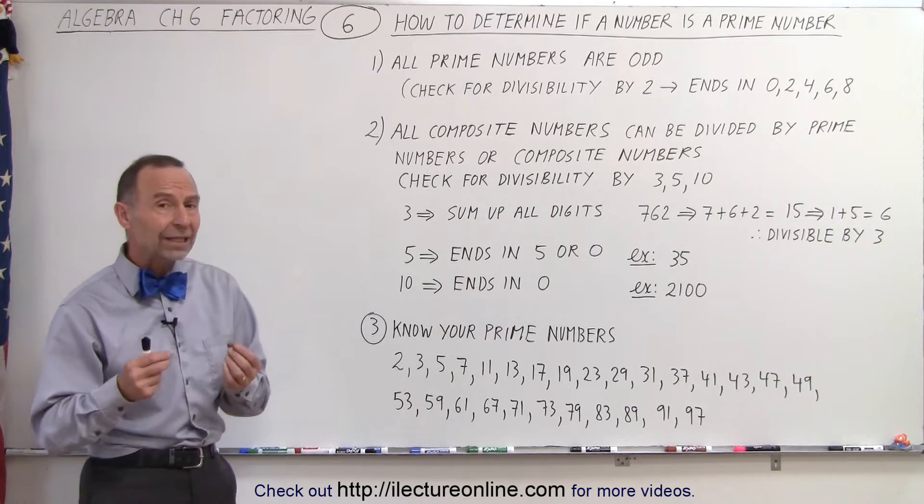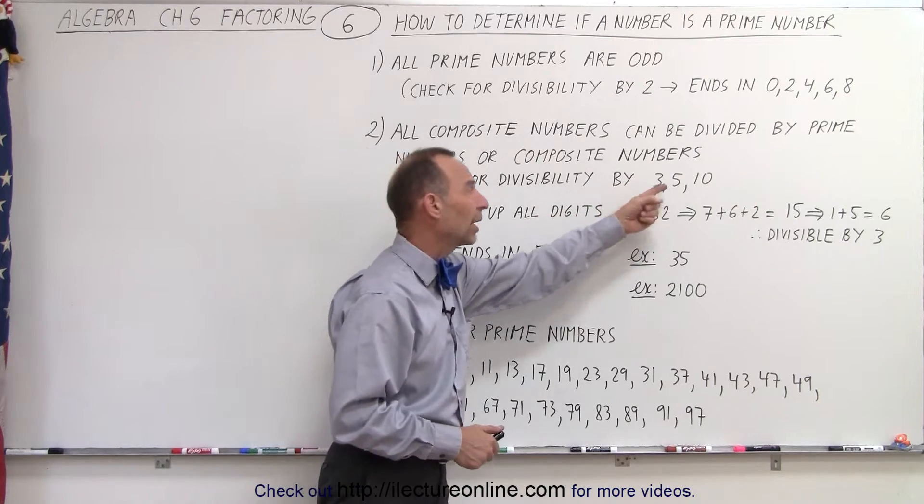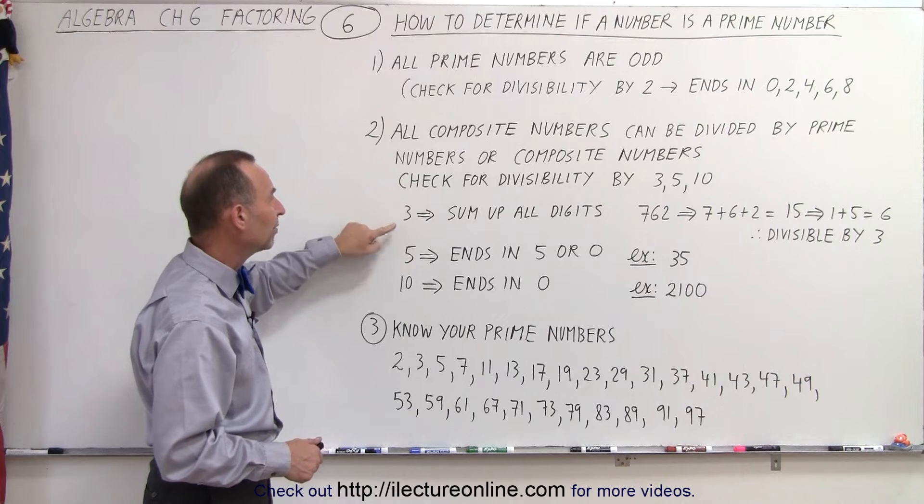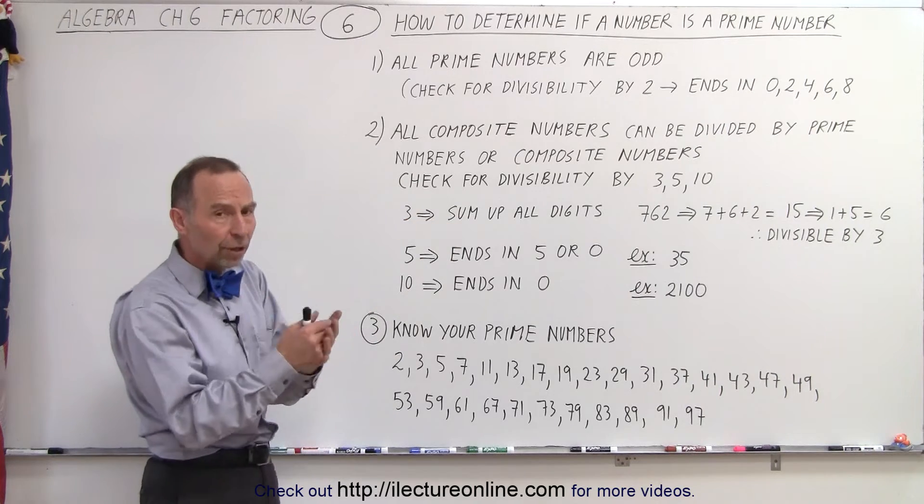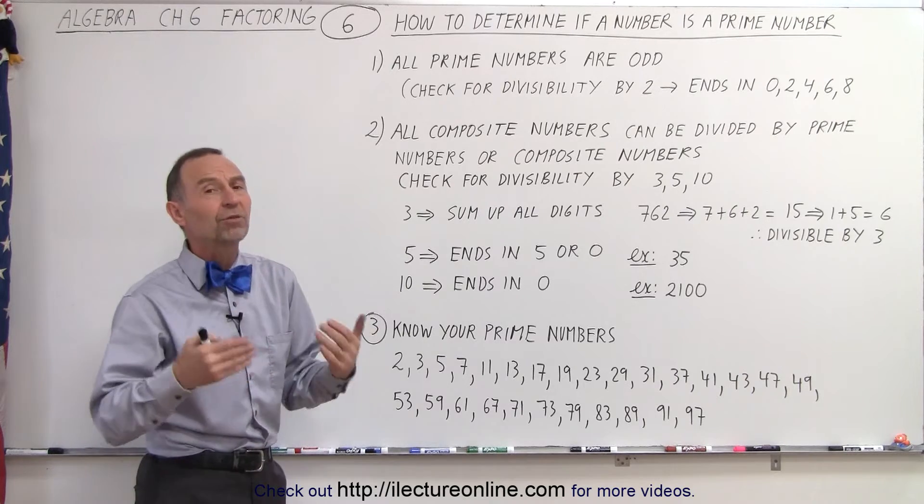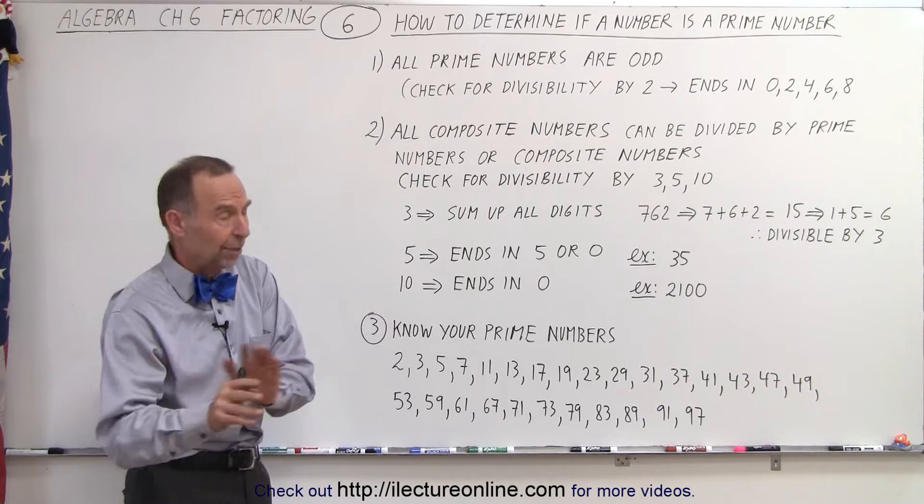Then we can also quickly check to see if it's divisible by 3, by 5, and or by 10. The rule for divisibility by 3 is that we can sum up all the digits of the number, and if that sum is divisible by 3, then the number is divisible by 3, and then of course it's not a prime number.